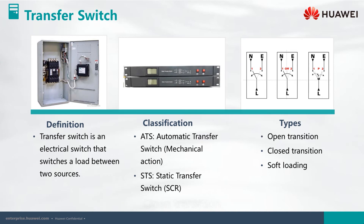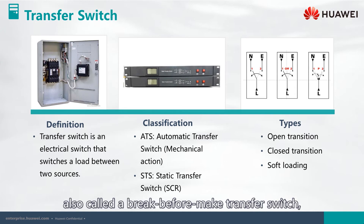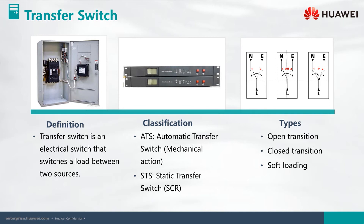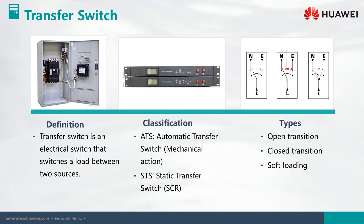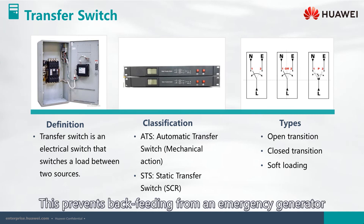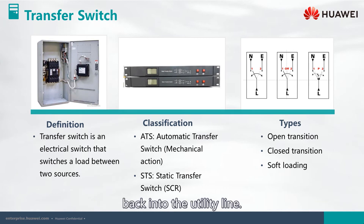An open transition transfer switch, also called a break-before-make transfer switch, breaks contact with one source of power before it makes contact with another. This prevents back-feeding from an emergency generator back into the utility line.